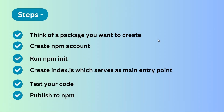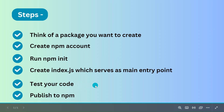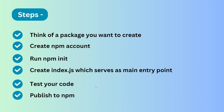Let's go through the steps once more. First, get an idea — think of a package you want to create. Second, have an npm account. Third, create a folder and run npm init. Fourth, create index.js as the main entry point with your functionality. Fifth, test your code. Finally, publish to npm. One thing we didn't do is add the GitHub repository link in package.json, but we have successfully published our package. If you learned something new, don't forget to like and subscribe — thank you for watching.